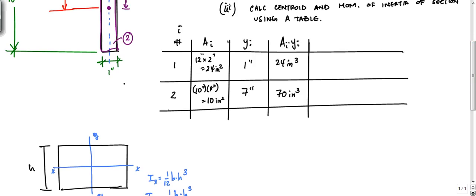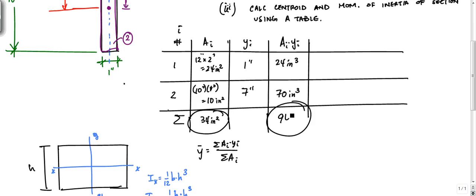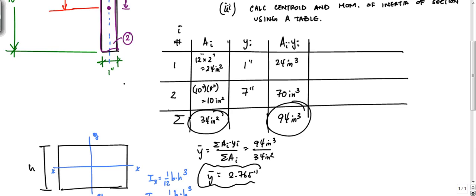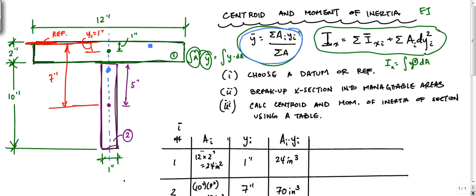Now I have this table. Y-bar is equal to the sum of A_i times Y_i divided by the sum of A_i. The sum of the areas column is 10 plus 24, which is 34 inches squared. The sum of the A_i·Y_i column is 94 inches cubed. So 94 inches cubed divided by 34 inches squared tells me Y-bar from my datum is 2.765 inches.